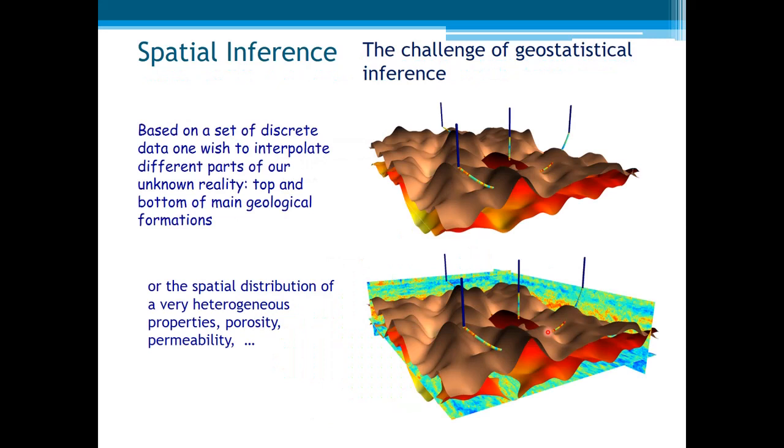But note that identical deterministic models can sometimes be used in just few situations of natural phenomena, where they are quite homogeneous and with low uncertainty, like for example, the top, bottom, and thickness of some sedimentary structures. But in most of the situations of natural phenomena, we want to solve the following problem. Based on a set of discrete data, one wish to interpret different parts of our unknown reality, top and bottom of the main geological formations, all the spatial dispersion of very heterogeneous properties, like porosity, permeability, and so on.